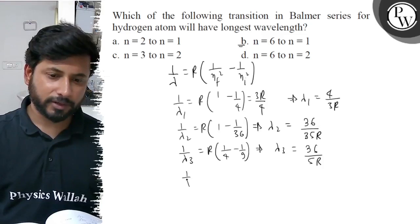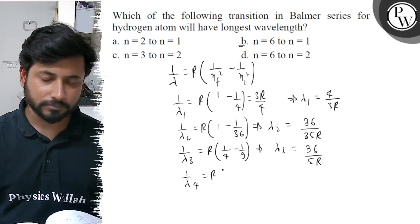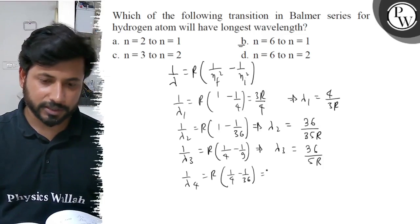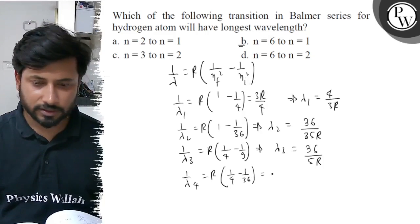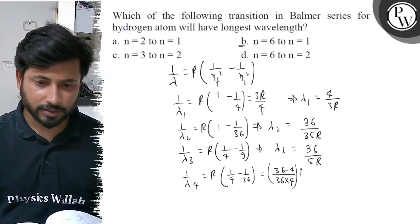And for Option D (n = 6 to 2): 1/λ₄ = R × (1/4 − 1/36). Therefore λ₄ = 36×4 / ((36 − 4) × R).